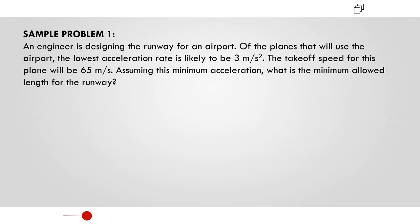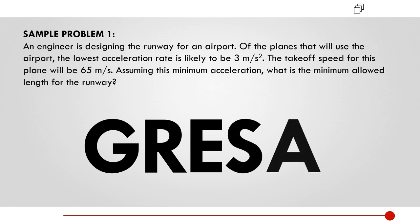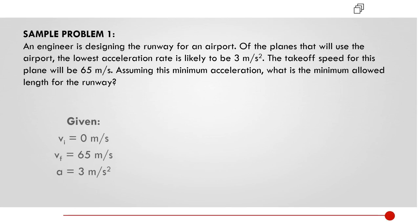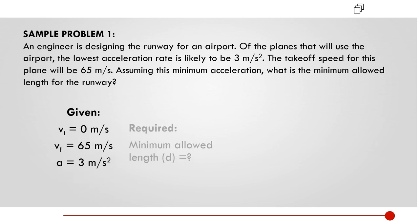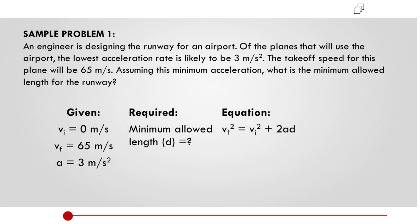For sample problem number one, an engineer is designing the runway for an airport. Of the planes that will use the airport, the lowest acceleration rate is likely to 3 meter per second squared. The take-off speed for this plane will be 65 meter per second. Assuming this minimum acceleration, what is the minimum allowed length for the runway? We will be using the GRES method in answering the question, or the given required equation, solution, and answer. The given for this problem are the initial velocity is equal to 0 meter per second, the final velocity is equal to 65 meter per second, and the acceleration is equal to 3 meter per second squared. The required is the minimum allowed length, or the distance for the runway. The equation we used is the final velocity squared is equal to initial velocity squared plus 2 times the acceleration times the distance.